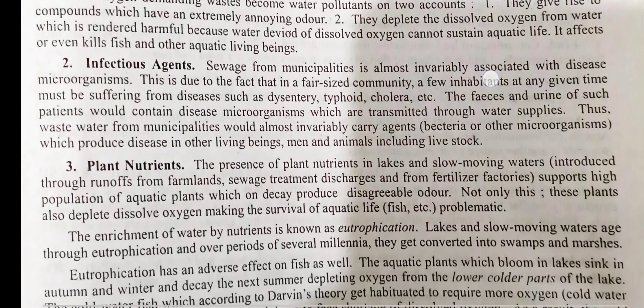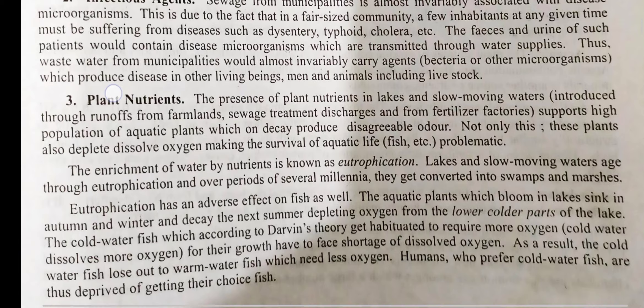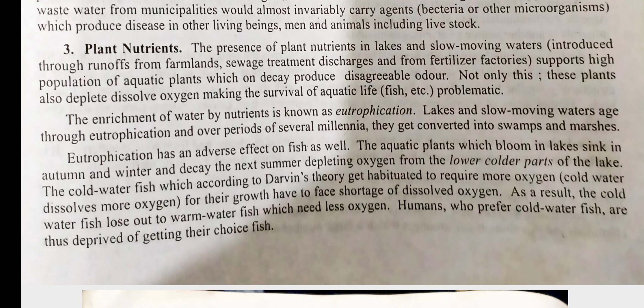Category 3: Plant nutrients. The presence of plant nutrients in lakes and slow-moving water supports high growth of aquatic plants which on decay produce disagreeable odor. Not only this, these plants also deplete dissolved oxygen making the survival of aquatic life problematic. The enrichment of water by nutrients is known as eutrophication. Lakes and slow-moving water undergoing eutrophication over the period of several millennia get converted into swamps and marshes.